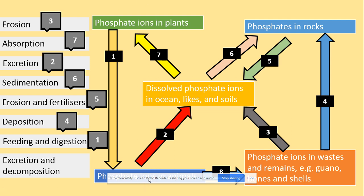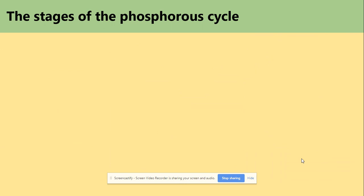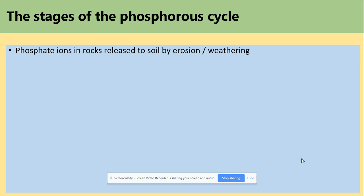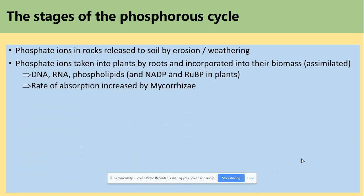The phosphate ions in animals also enter the waste stage by the process of decomposition. To summarize the stages: phosphate ions in rocks are released to soil by erosion; phosphate ions are taken into plants by roots and incorporated into biomass to produce DNA, RNA, phospholipids, and NADP, which is the final acceptor of hydrogen and electrons in the light-dependent reaction, and RuBP, which is the five-carbon compound in the light-independent reaction.